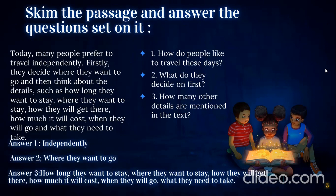For the second question — what do they decide on first — the answer is: where they want to go. How many other details are mentioned in the text? The details are: how long they want to stay, where they want to stay, how they will get there, how much it will cost, when they will go, and what they need to take. This is how we skim the passage.